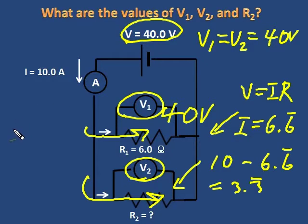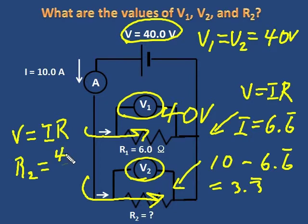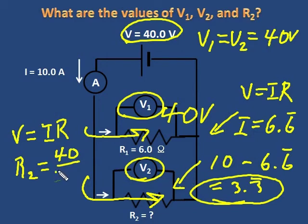Now that I have, for R2, both V and I, I can apply Ohm's law. And sure enough, I can find and solve for R2. R2 will equal V over I, which is 40 over 3.3 repeater. I just put that into my calculator and I get the answer: 12 ohms.